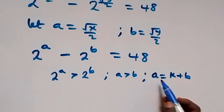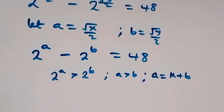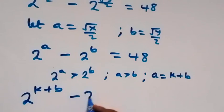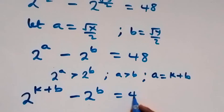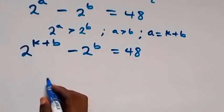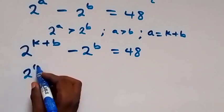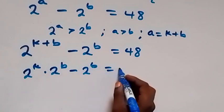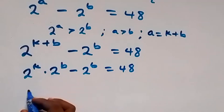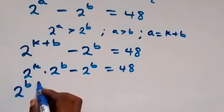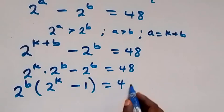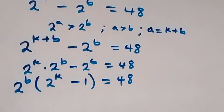Since a is greater than b, let a equal b plus a constant k. Substituting back, we have 2 raised to power k plus b, minus 2 raised to power b, equals 48. Applying the laws of indices, this becomes 2 raised to power k times 2 raised to power b, minus 2 raised to power b, equals 48. Factoring out 2 raised to power b: 2 raised to power b, times (2 raised to power k minus 1), equals 48.